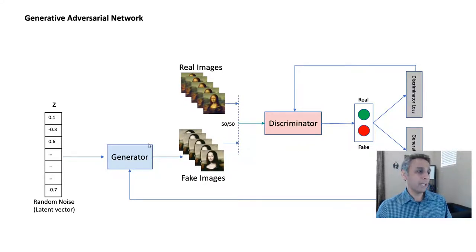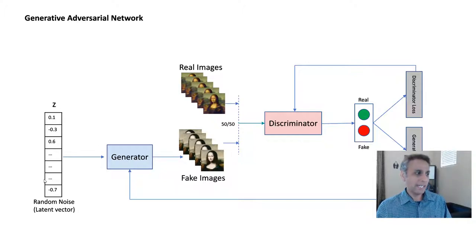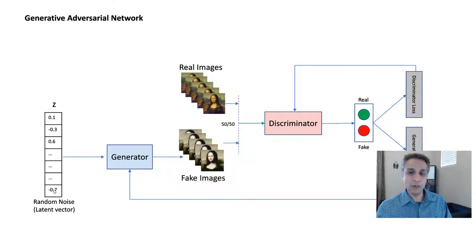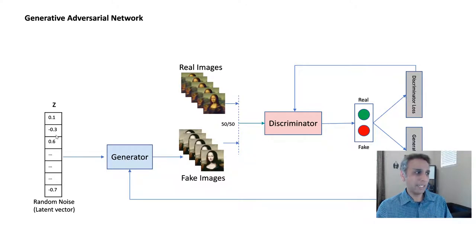Here is a high-level overview of generative adversarial networks. What goes in as input to the generator is what they call a latent vector — you can call it random noise. It's basically a vector of a given size; in my example I'll be using a vector of size 100, meaning 100 random numbers feeding in as a seed to the generator. The generator takes that vector and tries to convert it into a fake image.